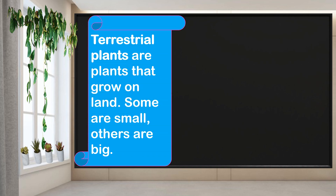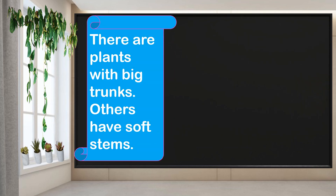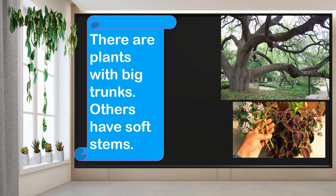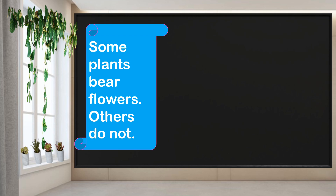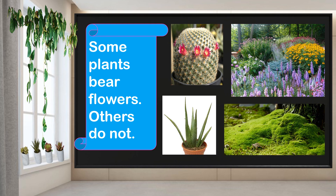Terrestrial plants are plants that grow on land. Some are small and others are big, just like trees. There are plants with big trunks, others have soft stems — like tomato, which also has soft stems. Some plants bear flowers, my favorite, and others do not, like aloes and mosses. There are other plants that grow flowers, even trees — some of them grow flowers.